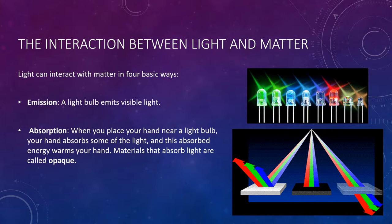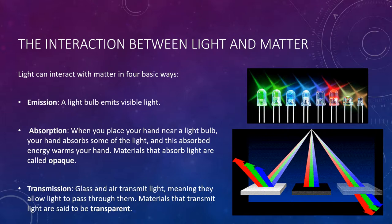Transmission: some forms of matter, such as glass or air, will transmit light, meaning it allows light to pass through. Materials that transmit light are said to be transparent. Many materials are neither perfectly transparent nor perfectly opaque — for example, dark sunglasses and clear eyeglasses are both partially transparent, but dark glasses absorb more and transmit less light. Materials often interact differently with different colors of light — red glass transmits red light but absorbs other colors, while a green lawn will reflect and scatter green light but absorbs others.